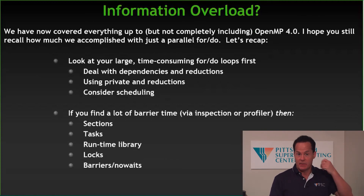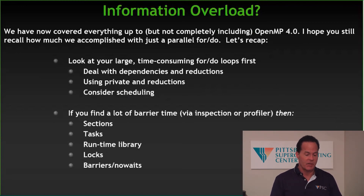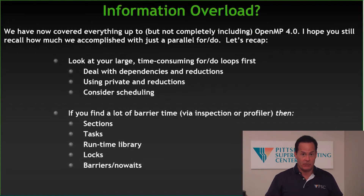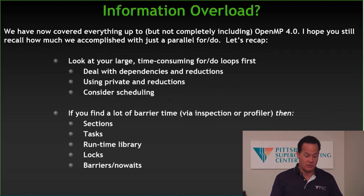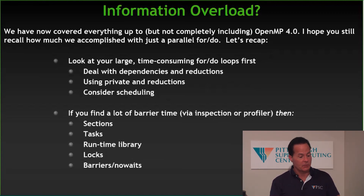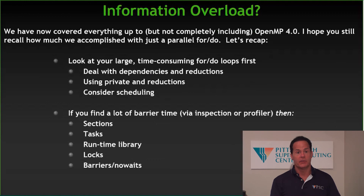To sum up before we jump into the very different directions of OpenMP 4 and 5: if it feels like information overload, that's because I've covered the vast majority of OpenMP capabilities. We haven't dived into the details of all of them, but you're aware of what capabilities exist, and you know how to use the most powerful tool, which is the parallel for or do loop. The approach is to look at the big loops, use a profiler if it's not clear where those are, and deal with dependencies and reductions.